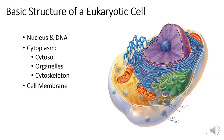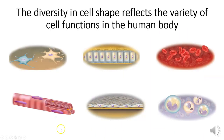This basic structure is altered somewhat in a few cell types. For example, mature red blood cells do not contain a nucleus or any DNA because the nucleus is lost when the cell matures. Skeletal muscle cells have many nuclei because multiple cells fuse during development and the nuclei are retained.